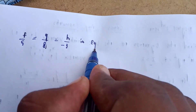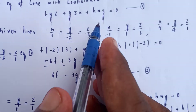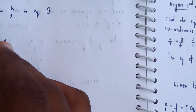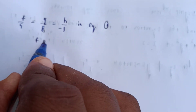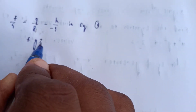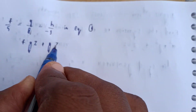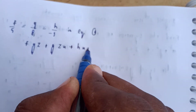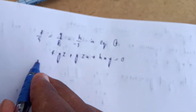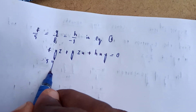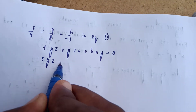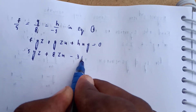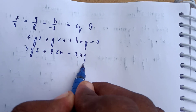Substituting back into equation number 1, f·yz + g·zx + h·xy = 0, the final equation of the quadratic cone is: 5yz + 8zx − 3xy = 0.